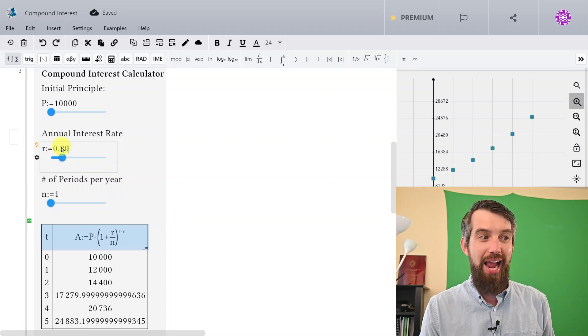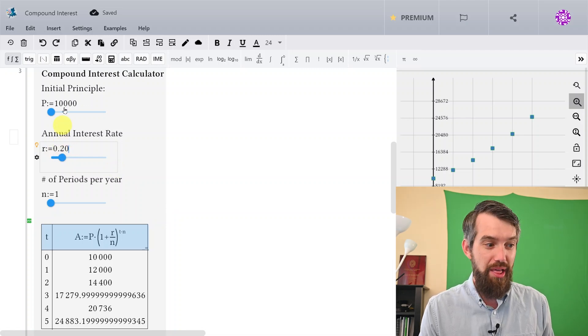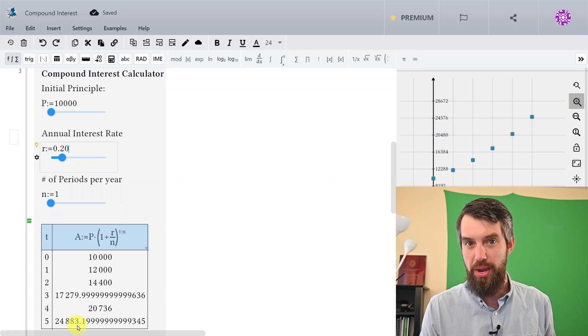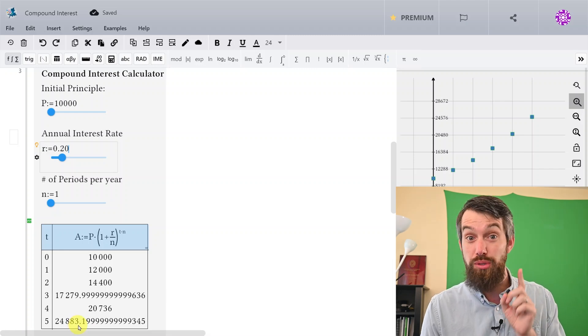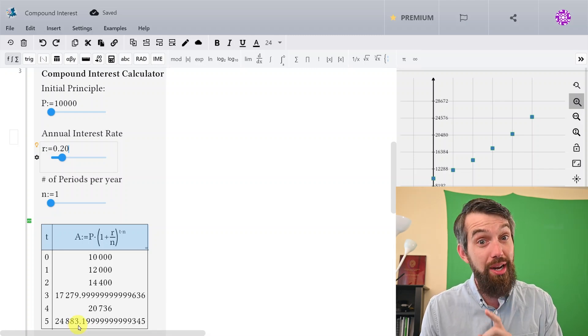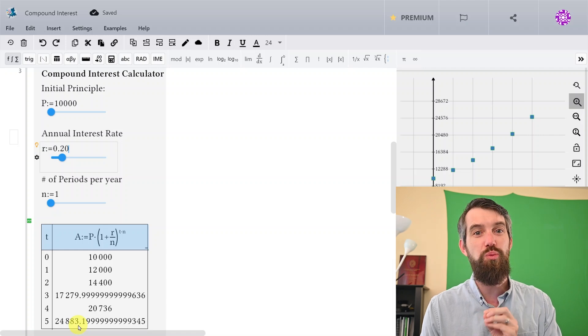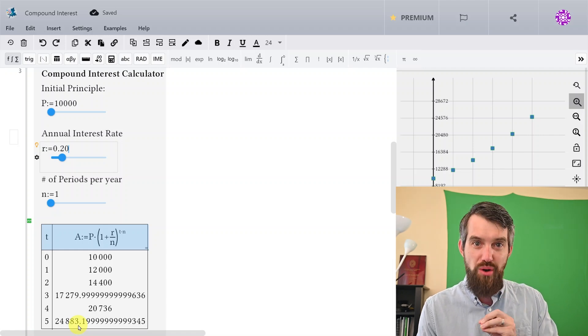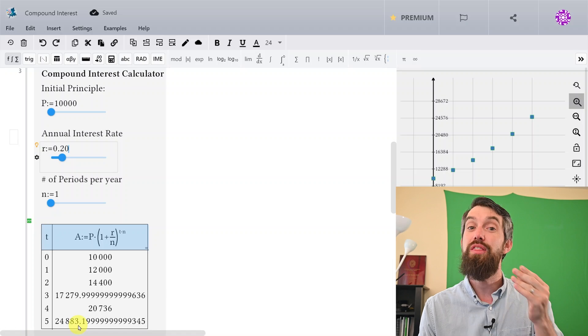Where when those interest rates start being high, and you have compounding, then you start getting these really large numbers. This is all if it compounds once per year, but the story's going to get a little bit worse in a moment, because we need to talk about what happens when you compound more often than once a year.